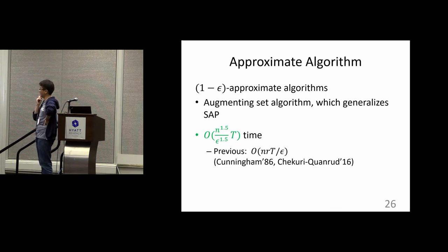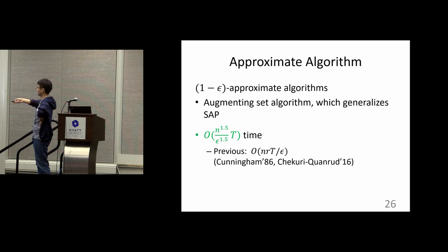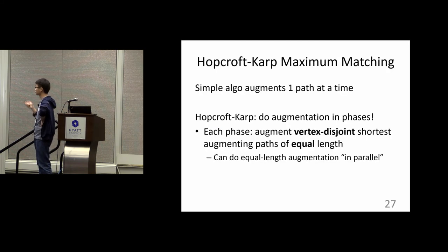We also study the problem in the approximate regime, seeking a (1−ε)-approximate solution. Our algorithm runs in N^1.5 time, which for small N improves over the current N·R algorithm. We introduce an augmenting set algorithm, which is actually a generalization of the shortest augmenting path algorithm.